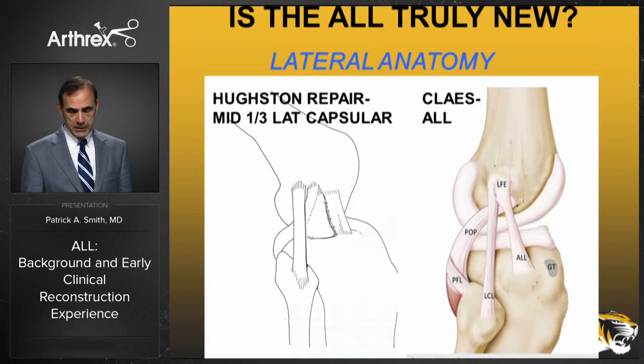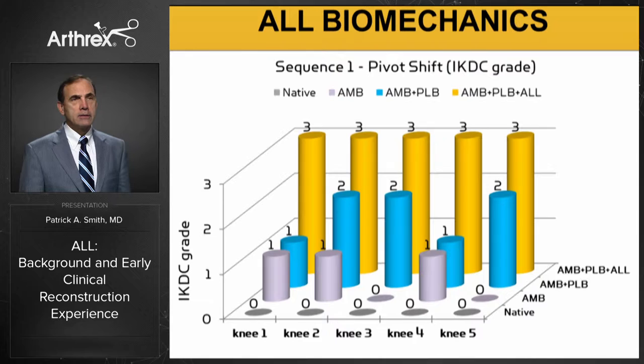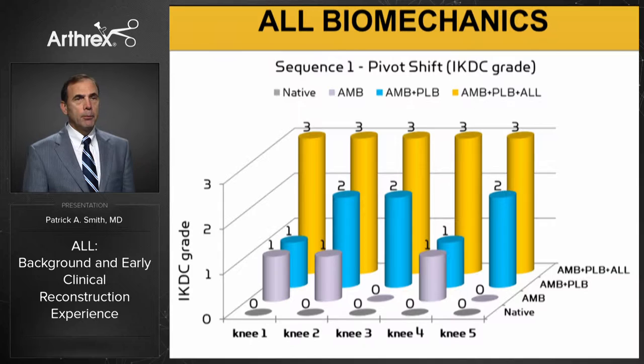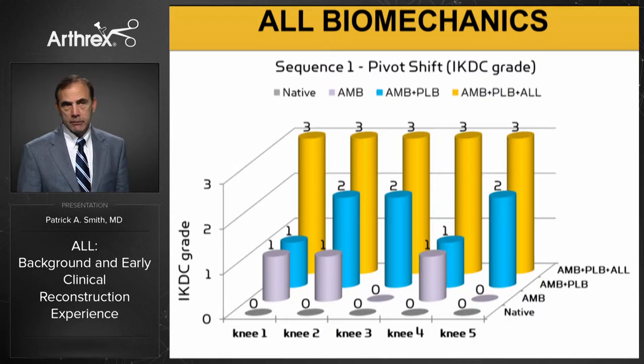Stephen Kleiss used full-leg cadavers with navigation for digitization, looking at 3D movements of the tibia versus the femur to study ALL biomechanics. In a cutting sequence, he cut the native ACL first — anteromedial bundle in light purple — and checked the pivot shift, getting one plus in many cases. Adding the PL bundle cut gave a two plus pivot shift in some cadavers. But when he cut the ALL in addition to the complete ACL tear, he had a markedly positive three plus pivot shift, showing the ALL was very contributory.